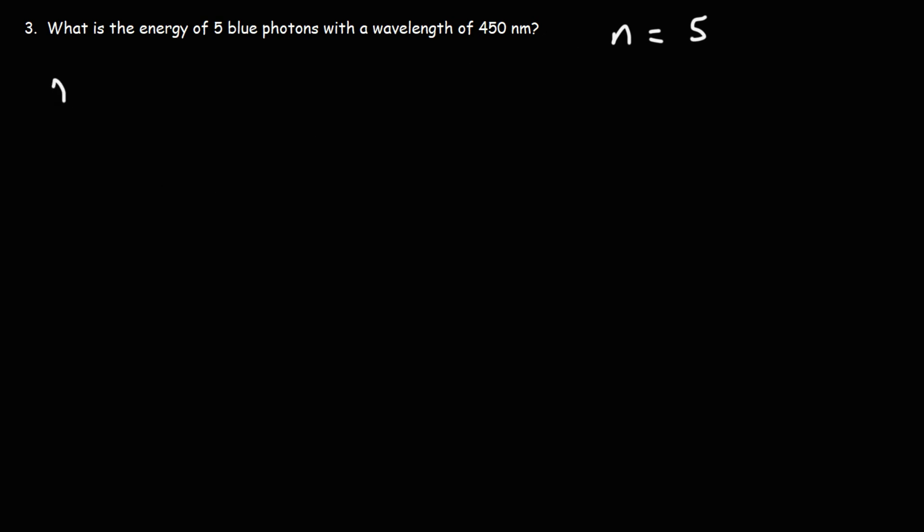So let's begin by calculating the frequency. The frequency is going to be the speed of light divided by the wavelength. That's 3 times 10 to the 8 meters per second divided by 450 nanometers, or 450 times 10 to the negative 9 meters.